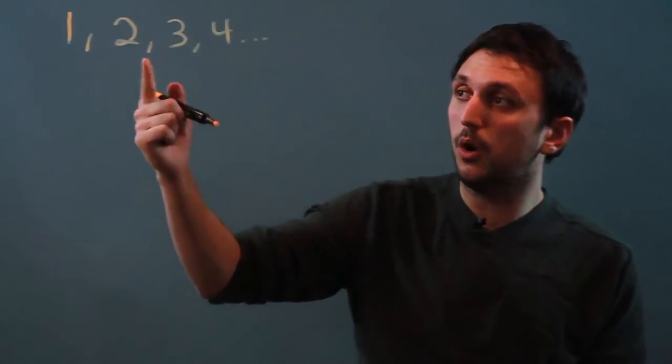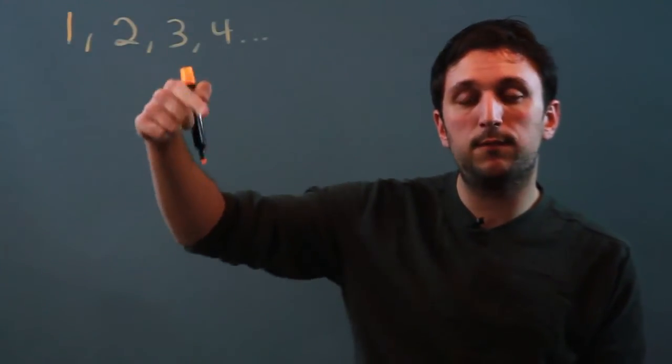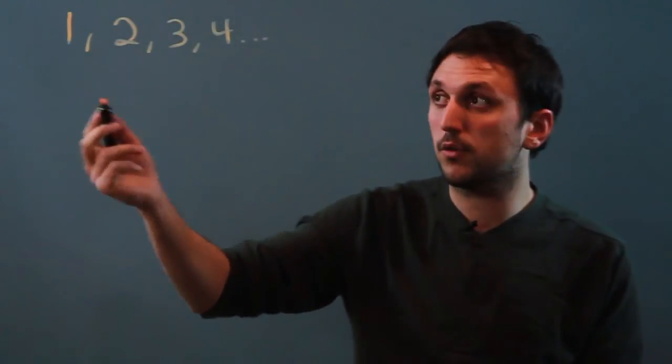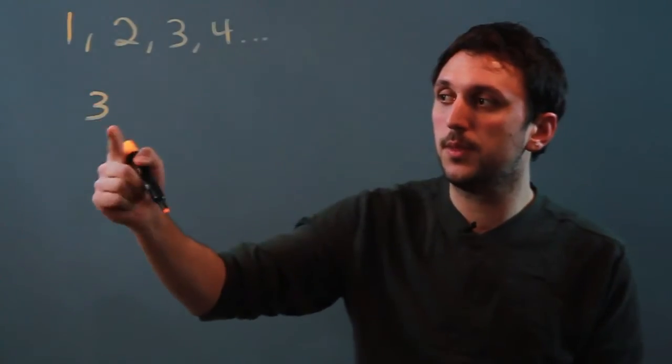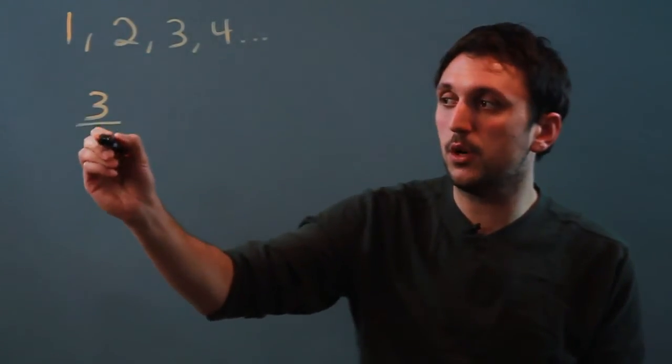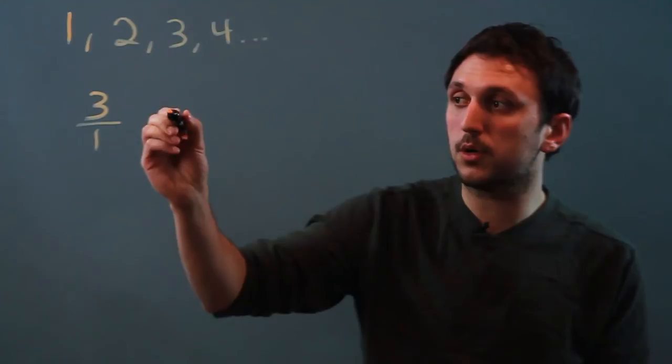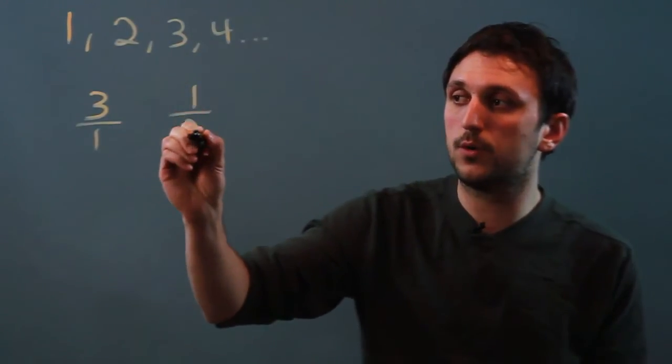Now, a reciprocal is the flip of any positive integer. So we take three, and three could also be called three over one, so its reciprocal is one over three.